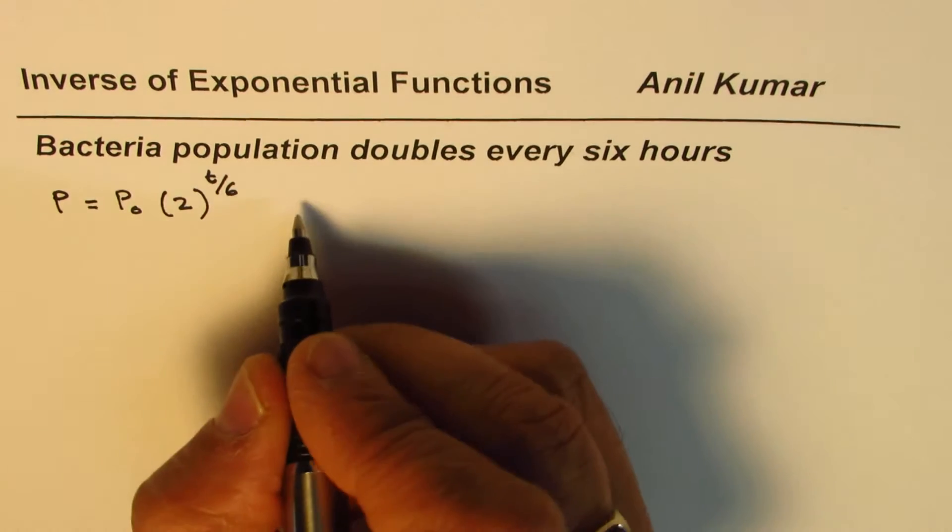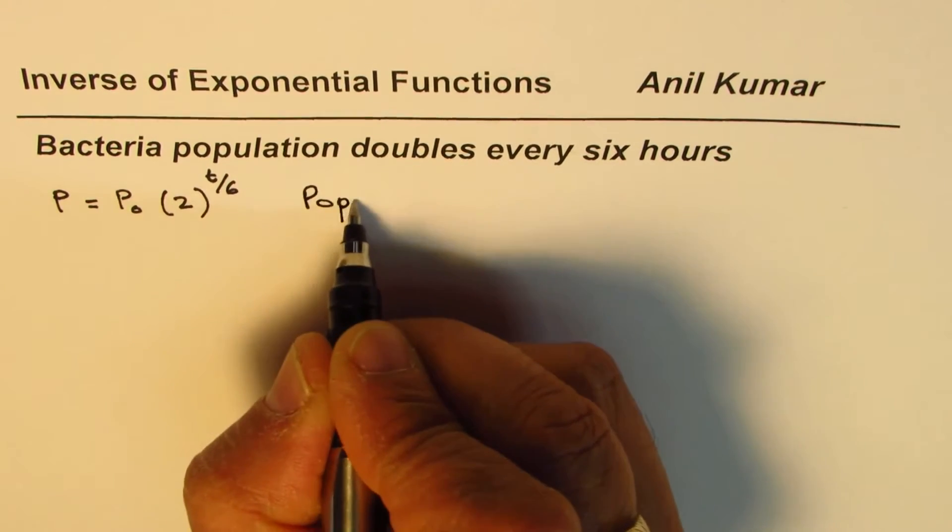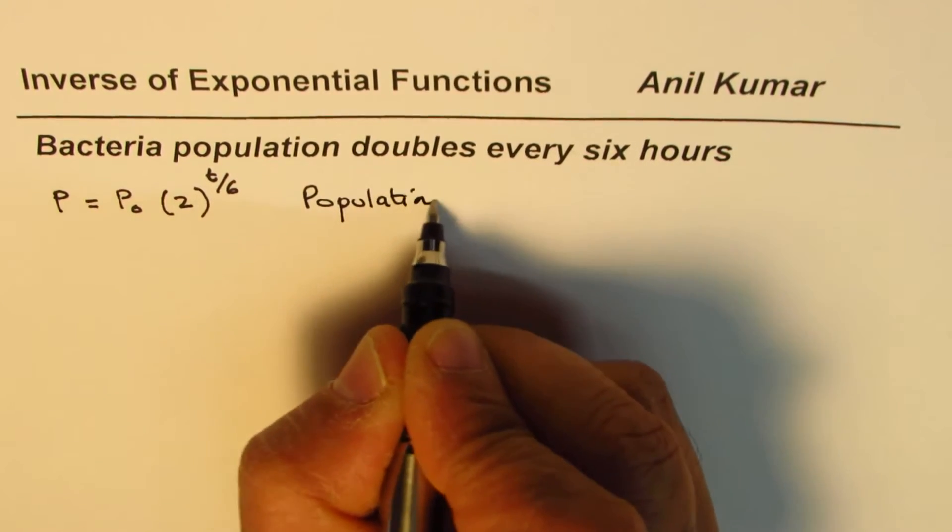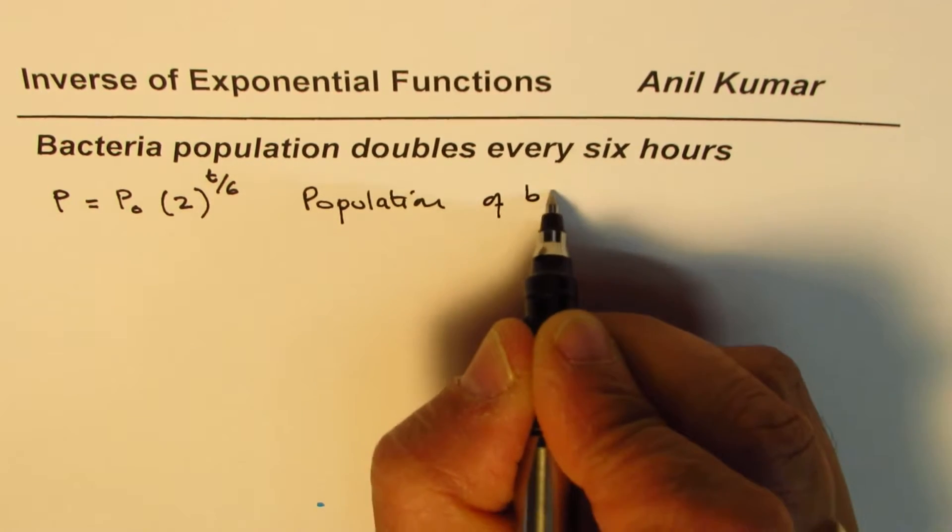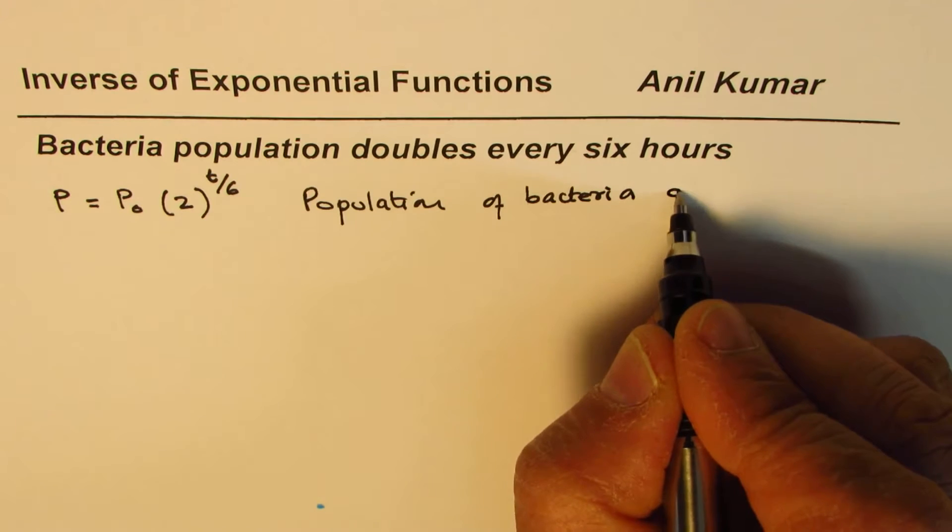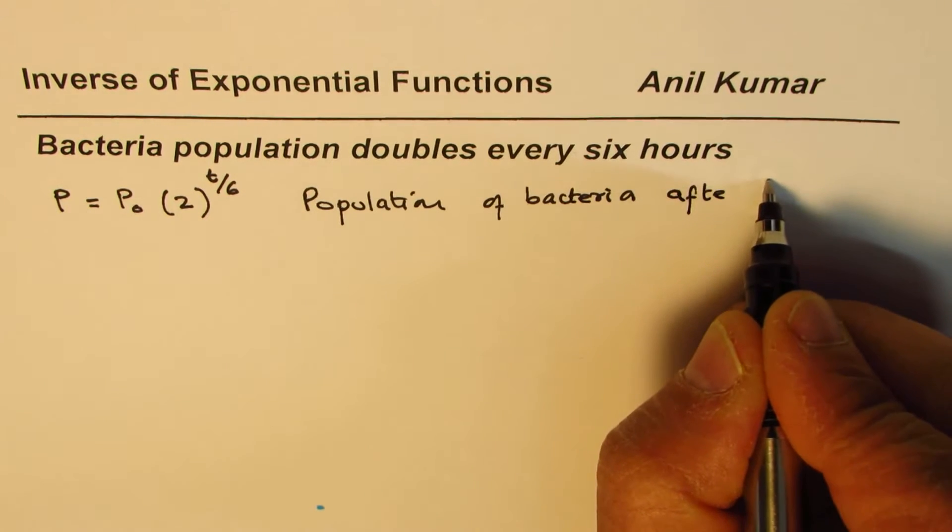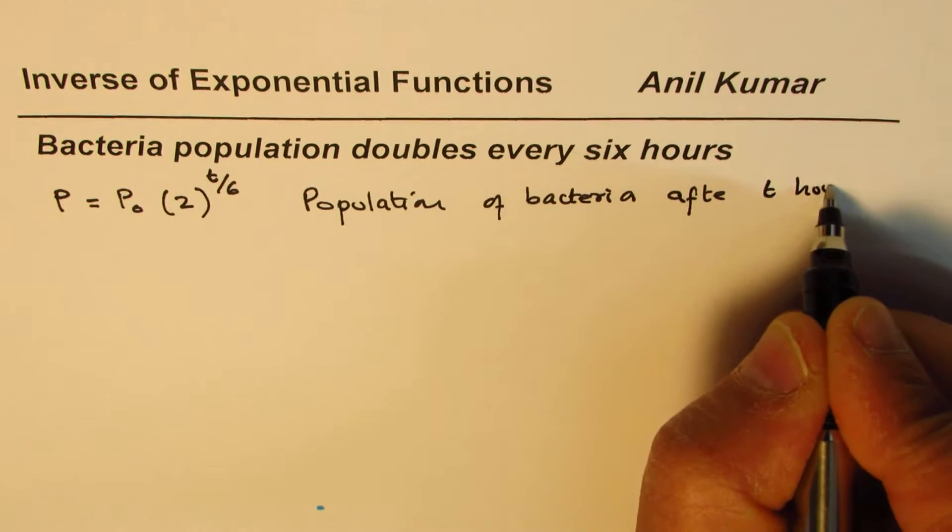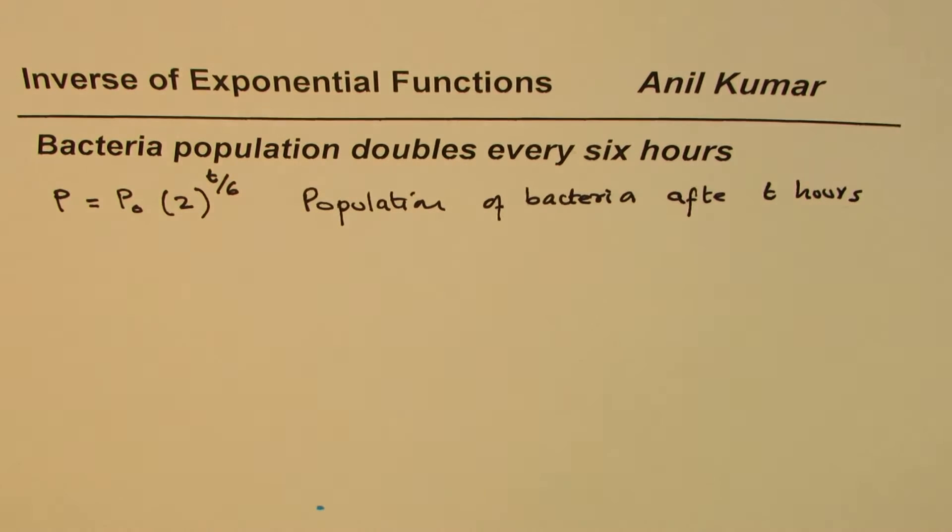That is the equation which gives you population of bacteria after t hours. Now if you see that the initial population is hundred, and if you want to find the population after four hours, let's say, then what we can do is we can just substitute these values and calculate.